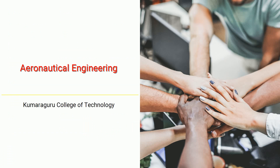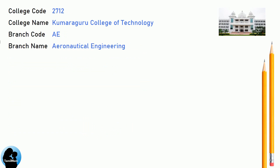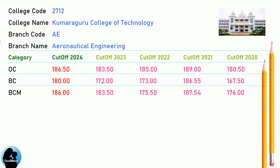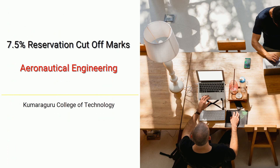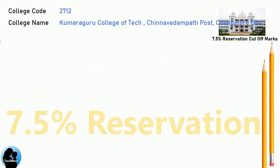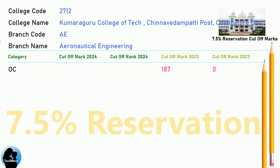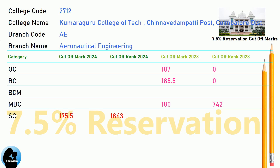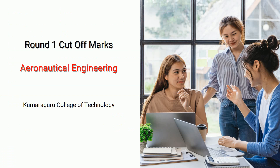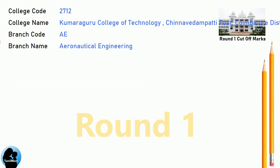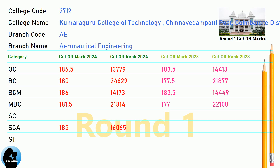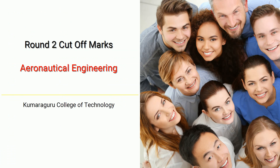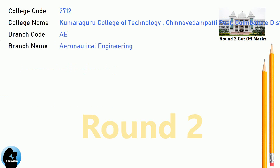DNA cutoff for Kumaraguru College of Technology in Aeronautical Engineering. DNA 7.5 Reservation cutoff for Kumaraguru College of Technology in Aeronautical Engineering. DNA Round 1 cutoff and DNA Round 2 cutoff for Kumaraguru College of Technology in Aeronautical Engineering.